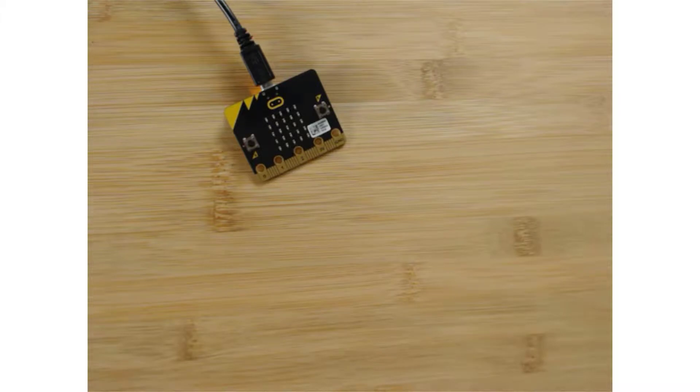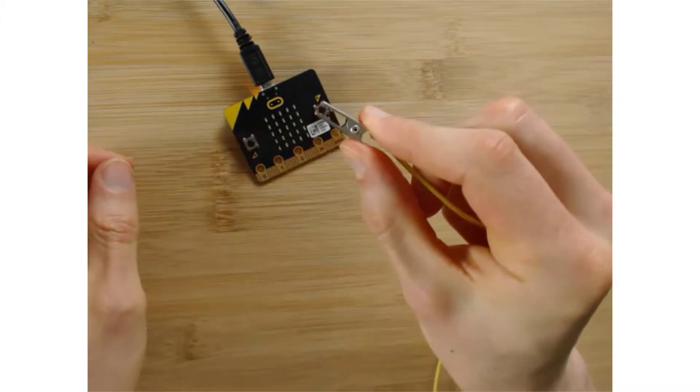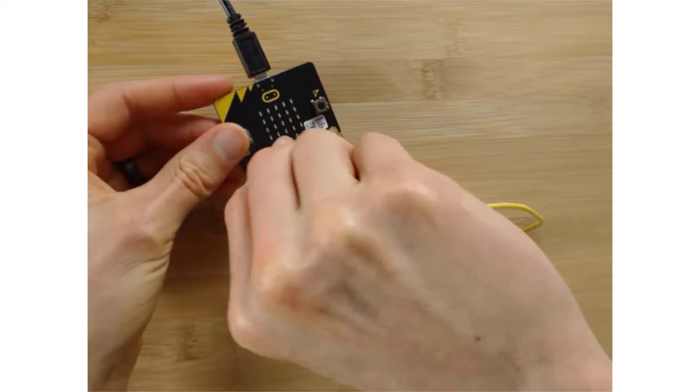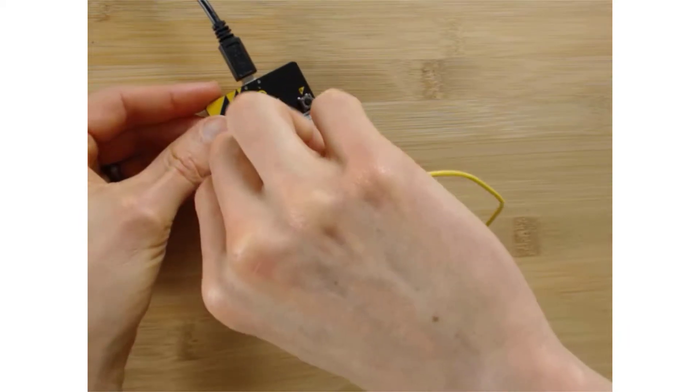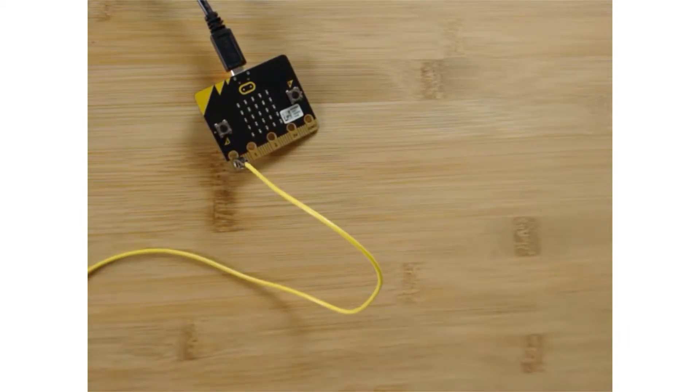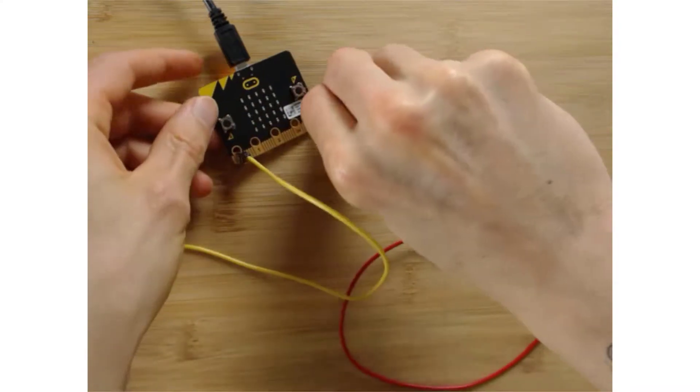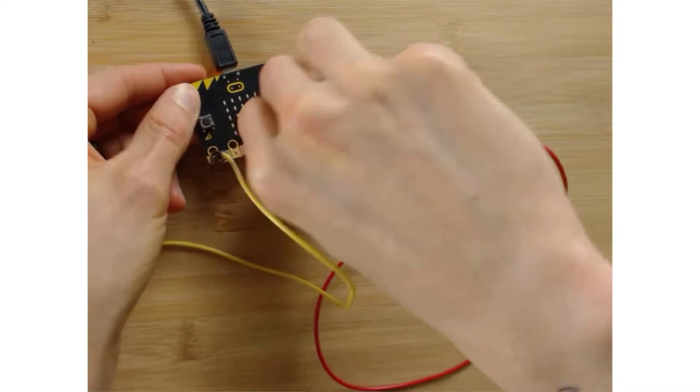But what I want to do is use a wire to do that. So I'm going to connect one of these alligator clips because it looks like an alligator. Don't let it bite you. And I'm going to connect it to zero, pin zero. And then I'm going to connect this other one, red, to ground. Doesn't matter what color it is.